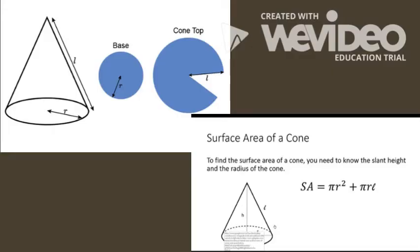The surface area for a cone is pi r squared — that's the area of the base, just the area of a circle — plus pi times the cursive L, which is slant height, times your radius. So we have the slant height, or L as you can see in the picture, and then you have R which is the radius of your base. You can see both of those labeled in the picture.